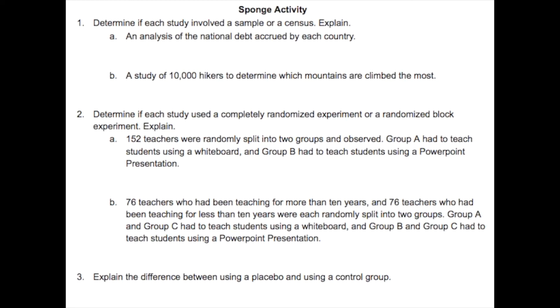Alright, now time for the sponge. Once again we have some questions here, please answer them along with explaining wherever it says explain. Number one, determine if each study involved a sample or a census. So, is example A involving a sample or is it involving a census? Same for B. And explain your answers as well. Number two, determine if each study used a completely randomized experiment or a randomized block experiment and then explain. And number three, explain the difference between using a placebo and using a control group. That's it for the lesson. Once again, please make sure to take notes on the entire lesson, attempt the sponge, take a picture or video of everything and submit it all to Google Classroom. And have a good night.